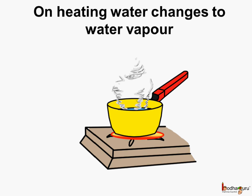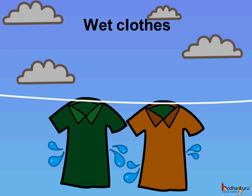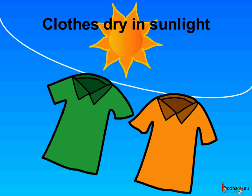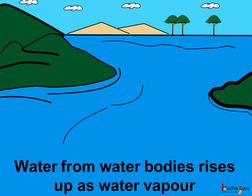We know on heating water it changes into water vapor. How do wet clothes dry? The heat of the sun changes the water in the wet clothes to water vapor which rises up and adds to the air. Even the water from water bodies gets heated up and rises up as water vapor due to the heat of the sun. So all this water vapor gets added to air.